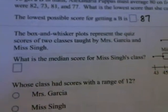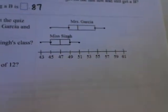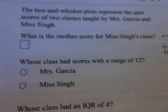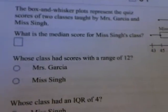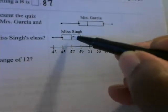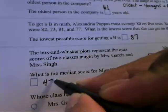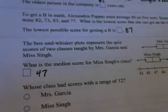The box and whisker plot represents the quiz scores of two classes taught by Mrs. Garcia and Ms. Singh. What is the median score for Ms. Singh's class? The median is the line in the middle of the box. In this case, that median is 47. So the median score is 47 for Ms. Singh's class.